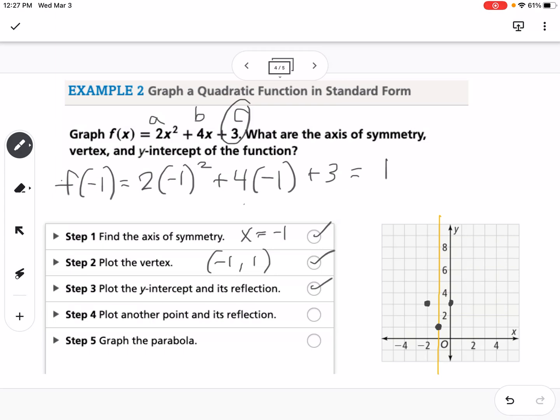It says to plot another point and its reflection. If I pick 1 to plug in, I get 9 out. So (1, 9) would be another point, and then its reflection would be (-3, 9). My last step is to graph the parabola. Connect those dots, and there we go. That's how we graph in standard form.